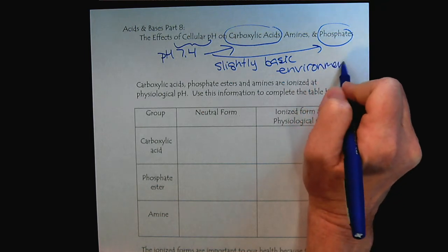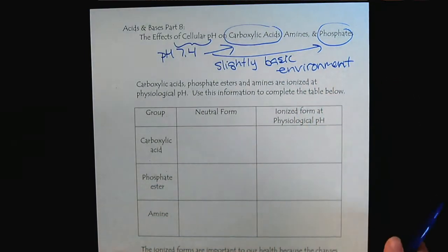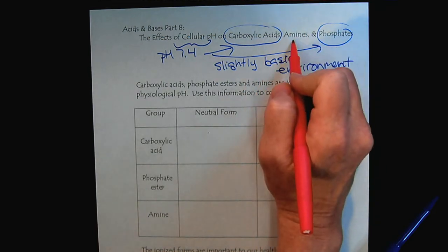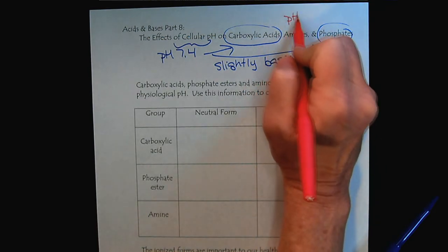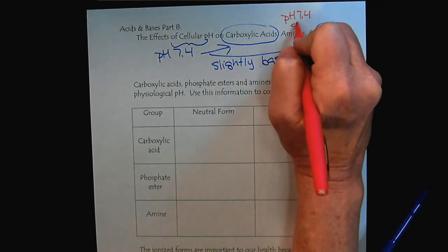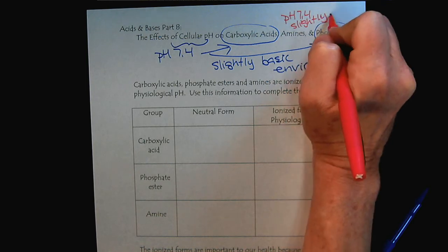Everything in chemistry is relative, though. For amines, because amines are weak bases, pH 7.4 for amines is slightly acidic.